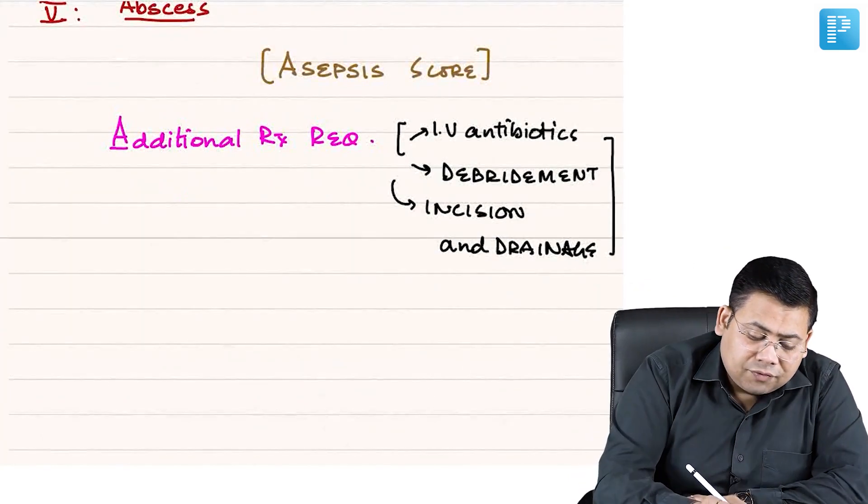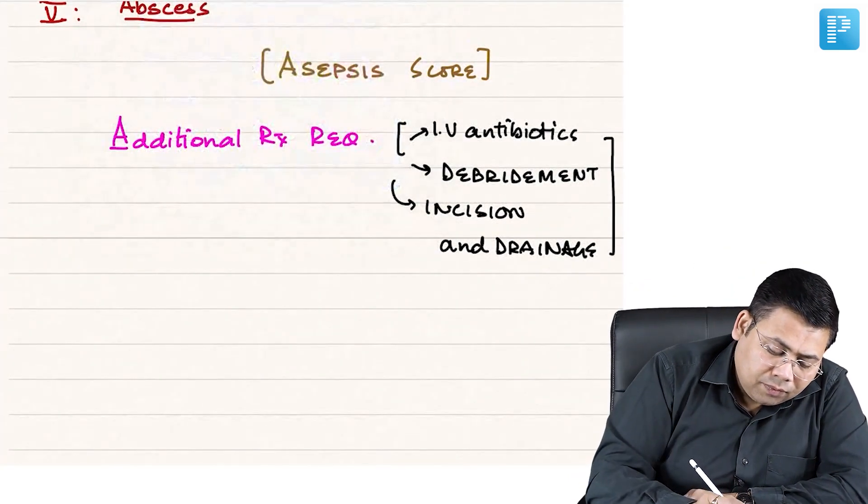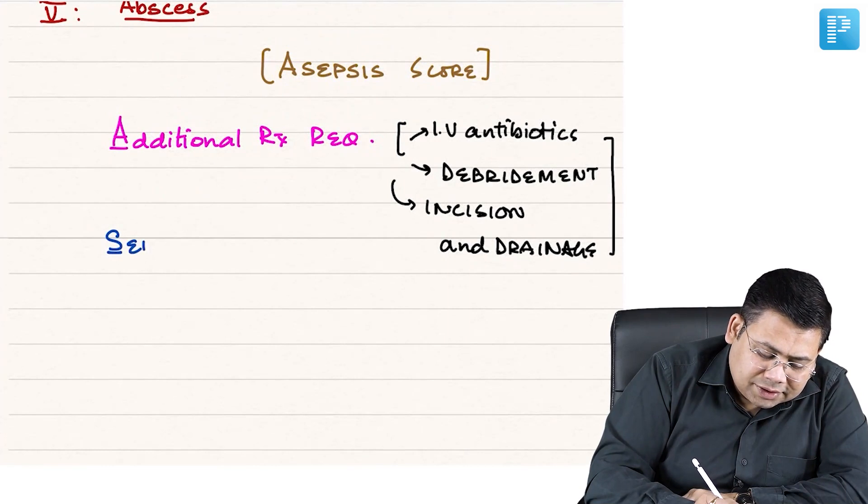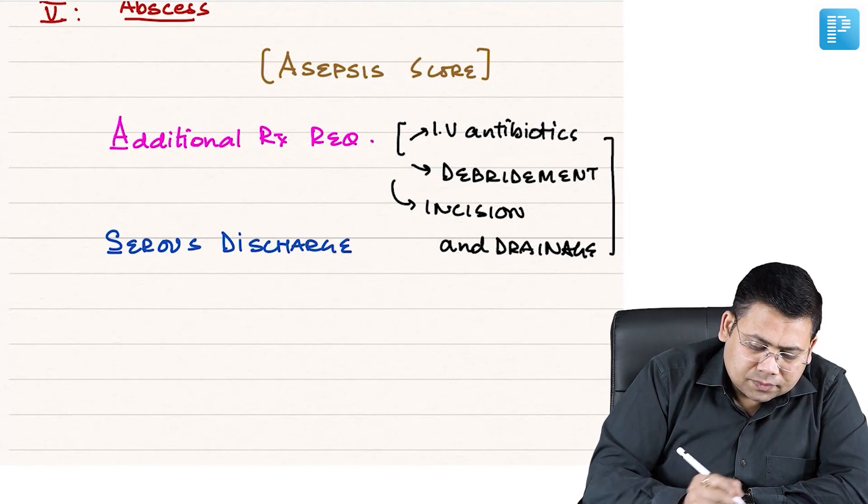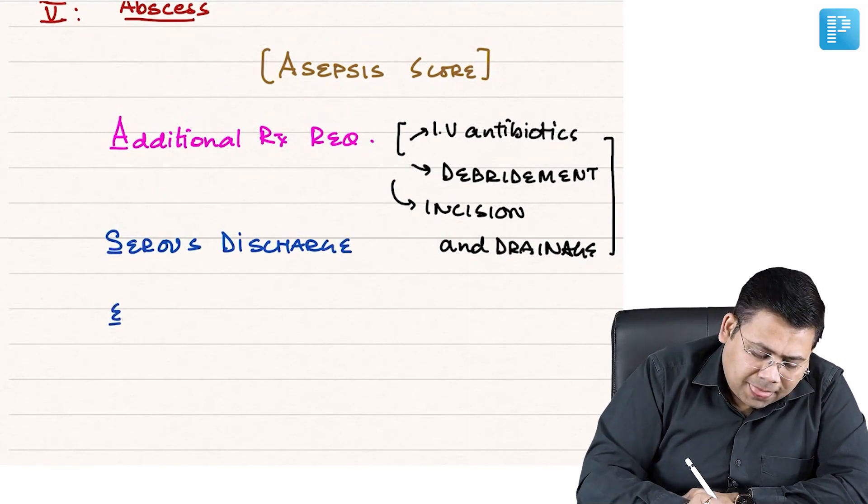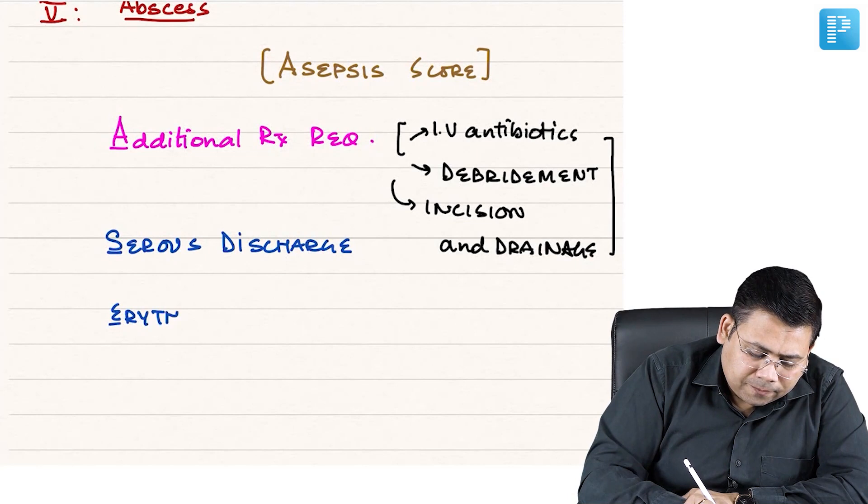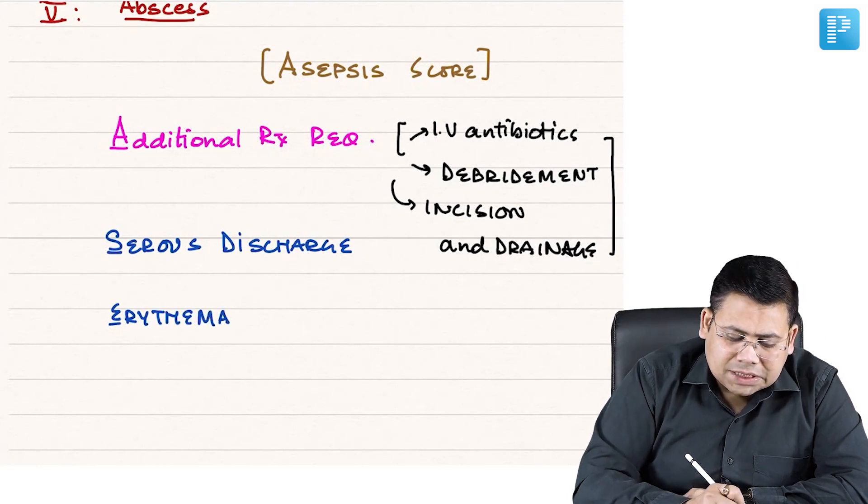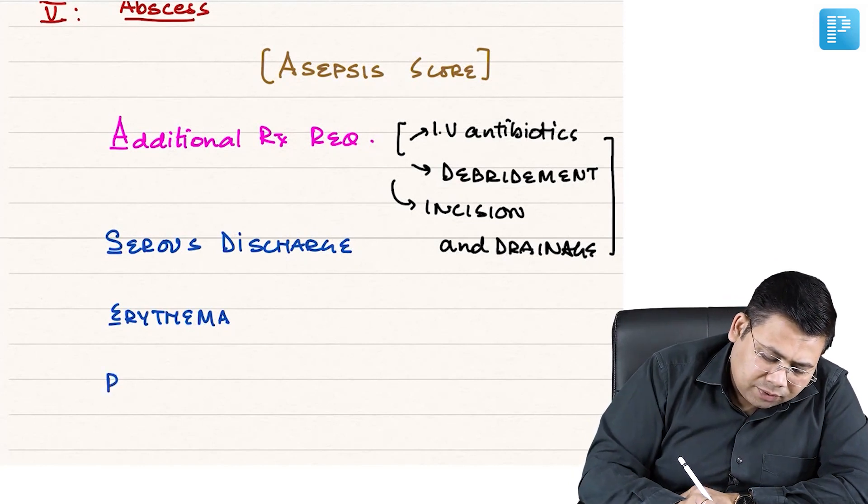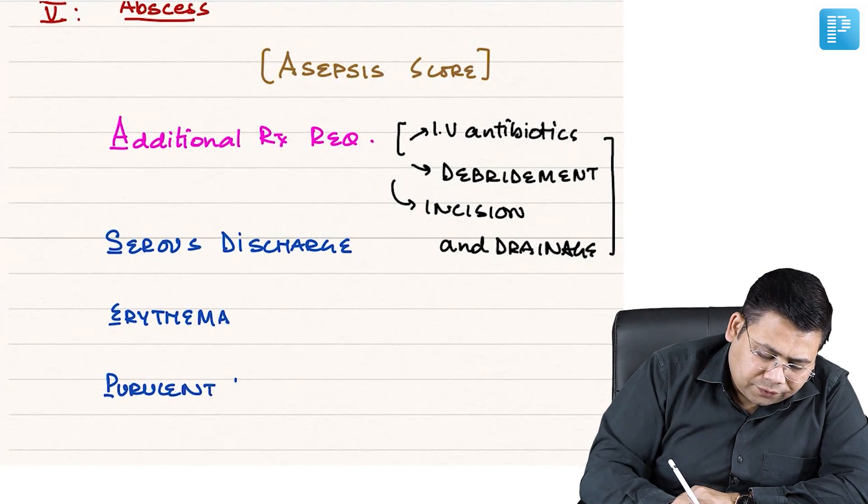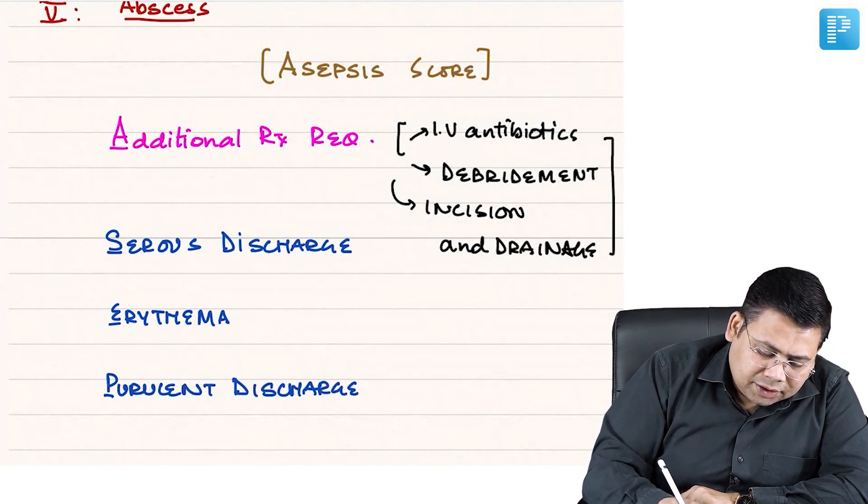S stands for serious discharge. E stands for erythema around the wound. P stands for purulent discharge.